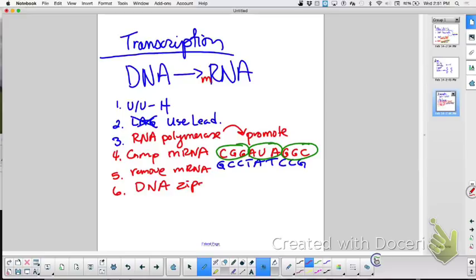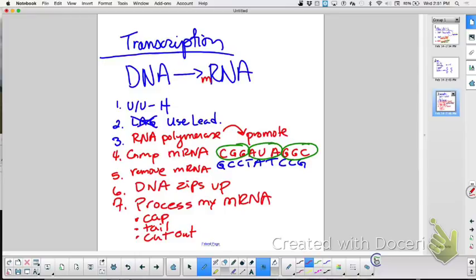Now I need to process my mRNA. How do I process my mRNA? Cap. What else? Tail. What else? Cut out introns. Yes. Cut out the introns. And I leave the exons. And this is why I can use one strand of DNA and get a whole bunch of different mRNAs, right? By depending on what I cut out. And then the next, now it can leave the nucleus. So I've made my mRNA. That process is transcription.